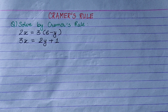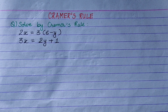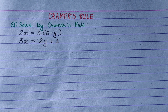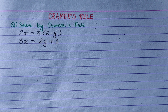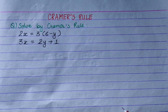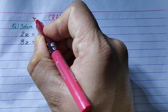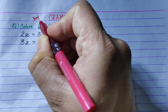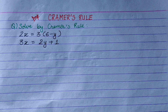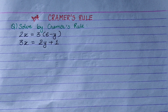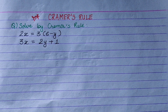Hi everyone. Today I am going to talk about the Simultaneous Equation using Cramer's Rule. This is very important — it is worth 4 or 5 marks in the exam. In the last year, I have a question. Let's go to the question.